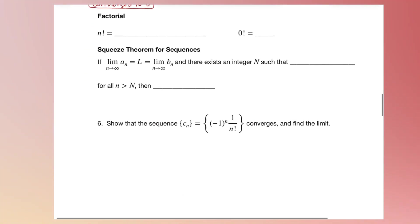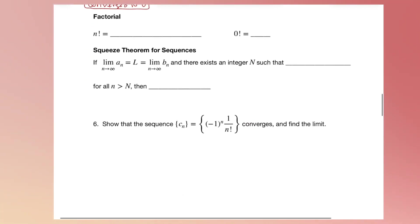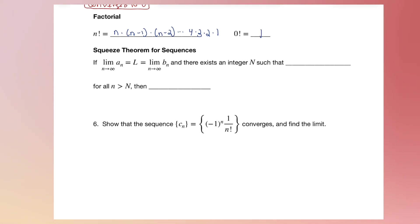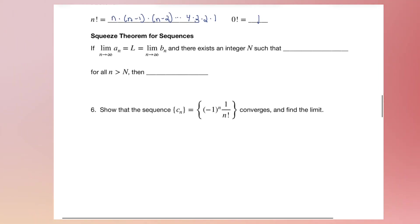Another notation important in this unit is the factorial. n factorial means n times (n minus 1) times (n minus 2) all the way down to 4, 3, 2, 1. Also, 0 factorial equals 1 and 1 factorial also equals 1 — make sure you know that.